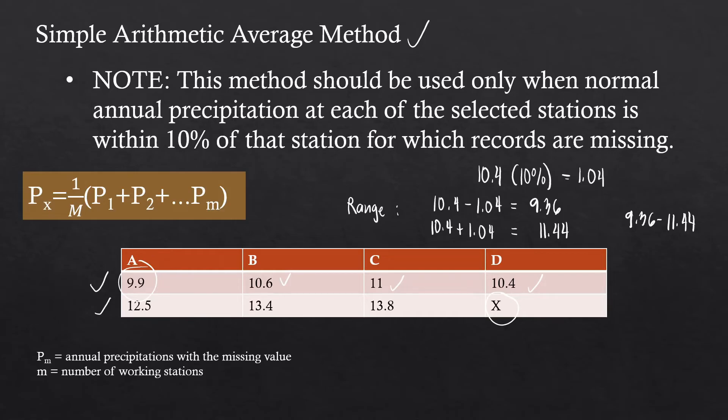However, if there is at least one station that doesn't fall within this range, you need to use the second method. Since we are within this range, we'll use this method. P sub M is the annual precipitation with the missing value, and M is the number of working stations. For this period, we only have 3 working stations because one was inoperative, so M equals 3. P sub X will be obtained using the formula 1 over M multiplied by P1 plus P2 plus P3.